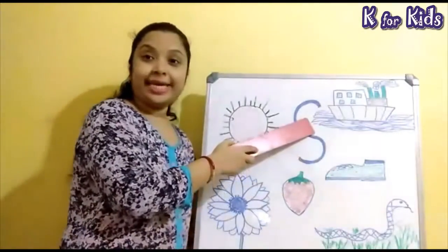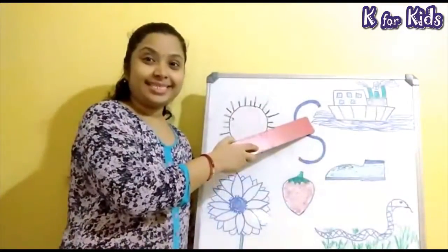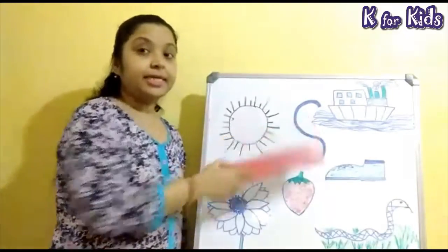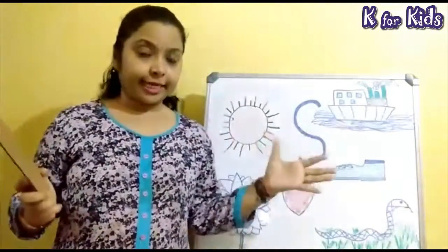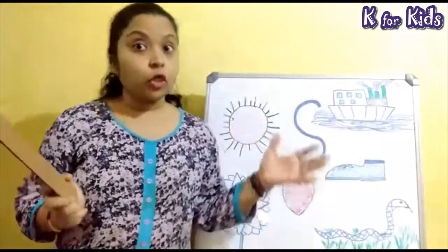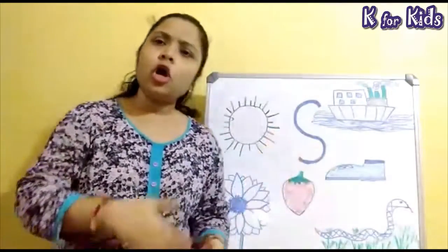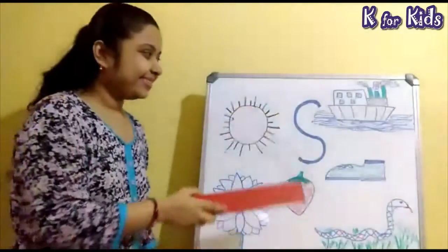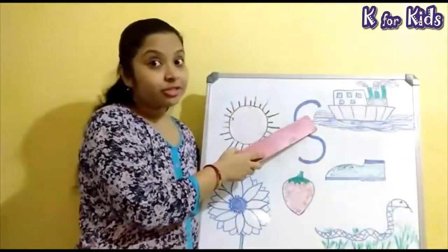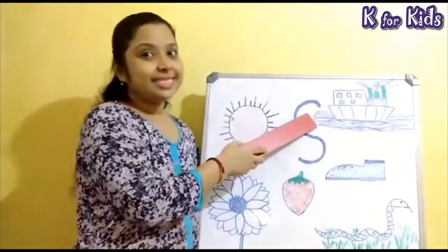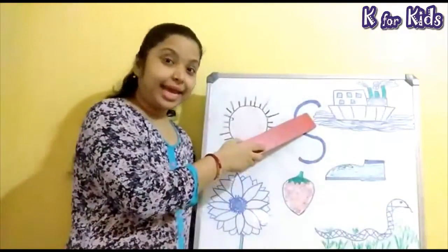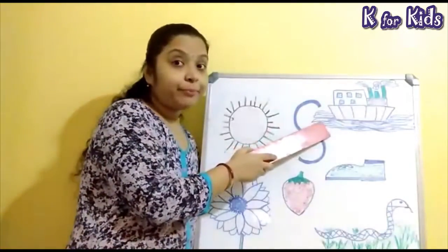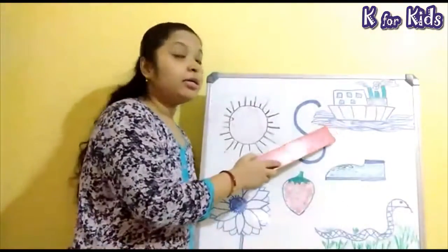Children, look here. What is this? This is a ship. A ship is a large boat which can carry passengers and goods over long distances on water. Ship starts with the alphabet S. S for ship.